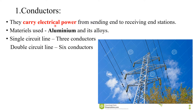First, we will discuss conductors or transmission lines. They carry electrical power from the sending end to the receiving end stations — they are the carriers of electrical power. The materials mainly used for conductors are aluminum and its alloys, because aluminum has good conductivity and its weight is very less compared to a good conductor like copper. For single circuit lines there will be three conductors and for double circuit lines there will be six conductors.